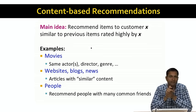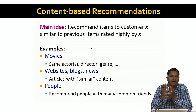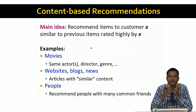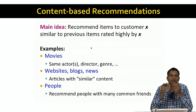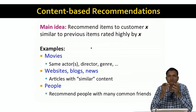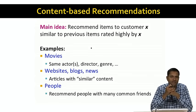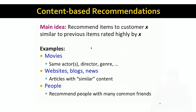For example, in the case of movies, you might recommend movies with the same actor or actors, director, genre, and so on. In the case of websites, blogs, or news, we might recommend articles with similar content or on similar topics. In the case of people recommendations, we might recommend people with many common friends to each other.